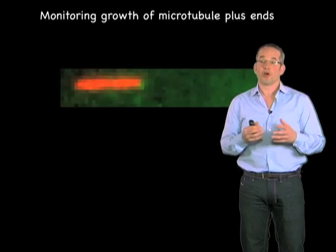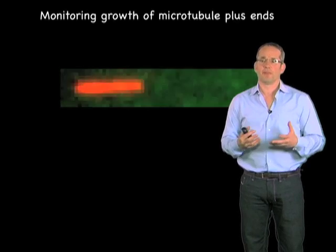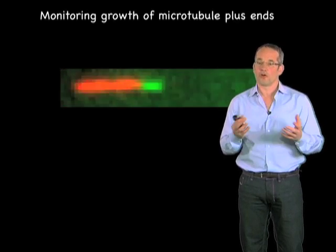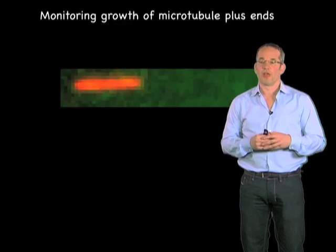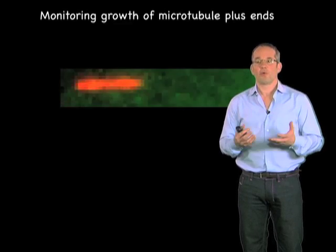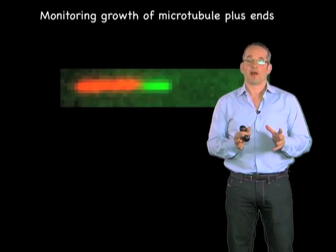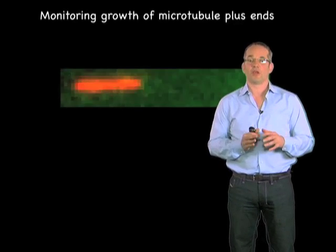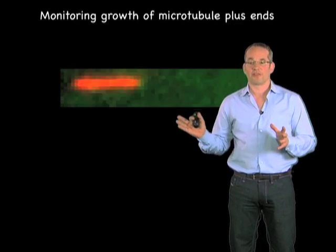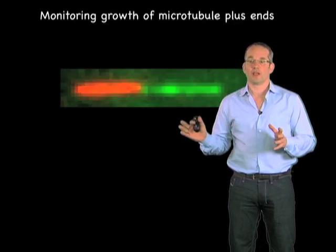What you'll notice is the red segment is stable — it's not growing and shrinking. You can ask yourself how that is, and that's key to our assay. By stabilizing the minus end, we can isolate the plus end growth and look at how that's regulated.